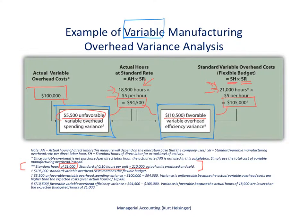To wrap up, we compared the flexible budget — $105,000 in expected costs — to the actual variable overhead costs of $100,000. The two variances explain that $5,000 difference: the $5,500 unfavorable spending variance and the $10,500 favorable efficiency variance.